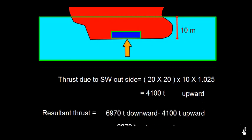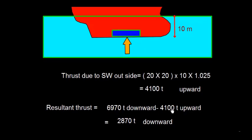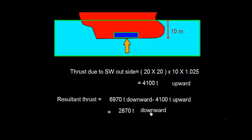The resultant thrust on the keel plate is going to be 6970 ton in downward direction, which we have calculated, and 4100 ton in upward direction. The resultant is 2870 ton in downward direction because the downward is more.